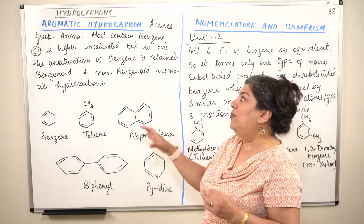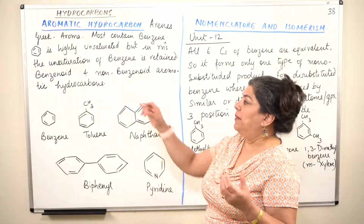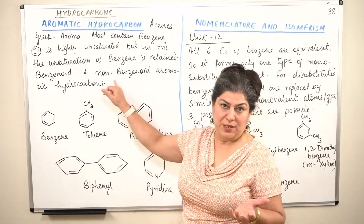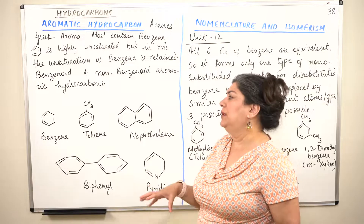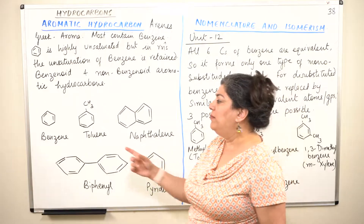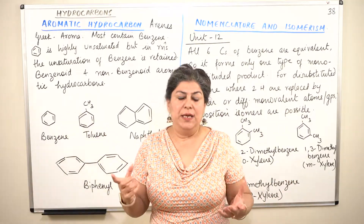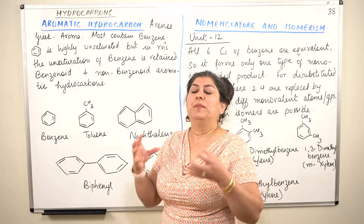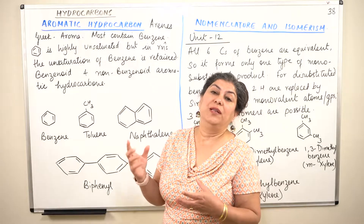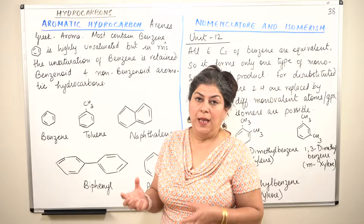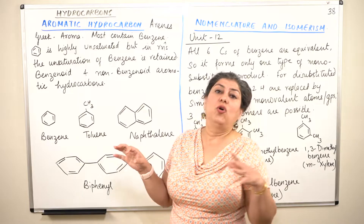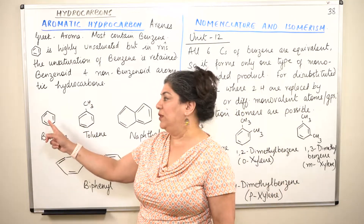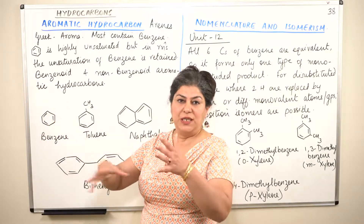Aromatic hydrocarbons are classified into two categories: benzenoid hydrocarbons and non-benzenoid hydrocarbons. Any aromatic hydrocarbon which has a benzene ring in it is known as a benzenoid aromatic hydrocarbon, and the majority of aromatic hydrocarbons are benzenoid. Benzene is a six-carbon ring with alternating double bonds in it.